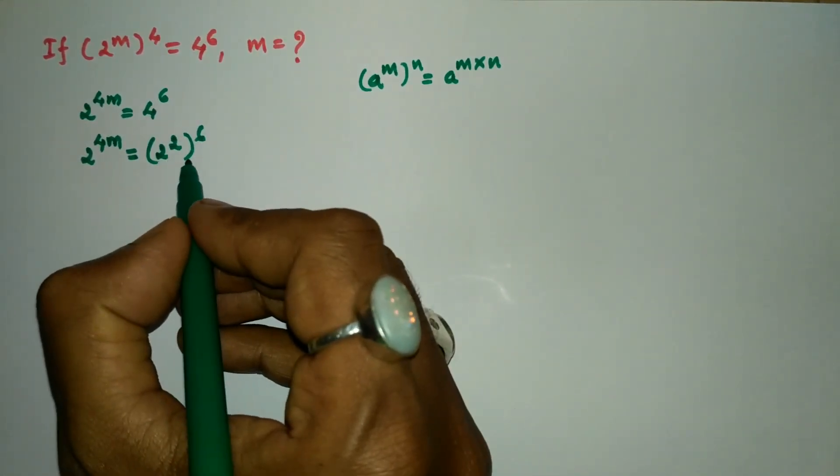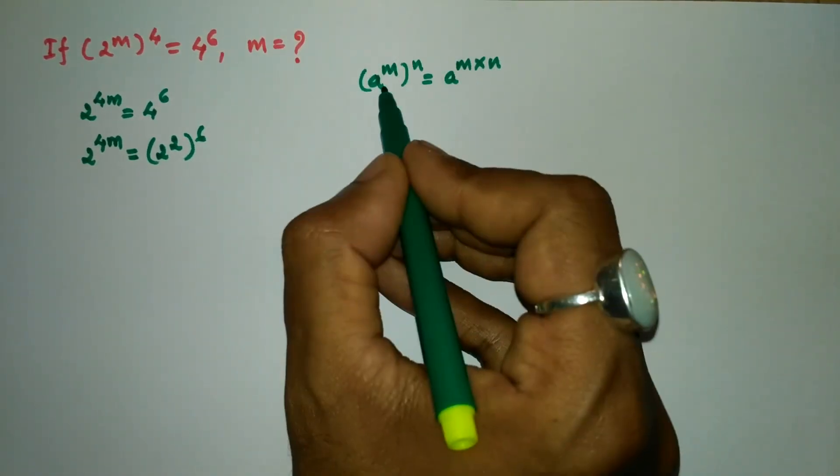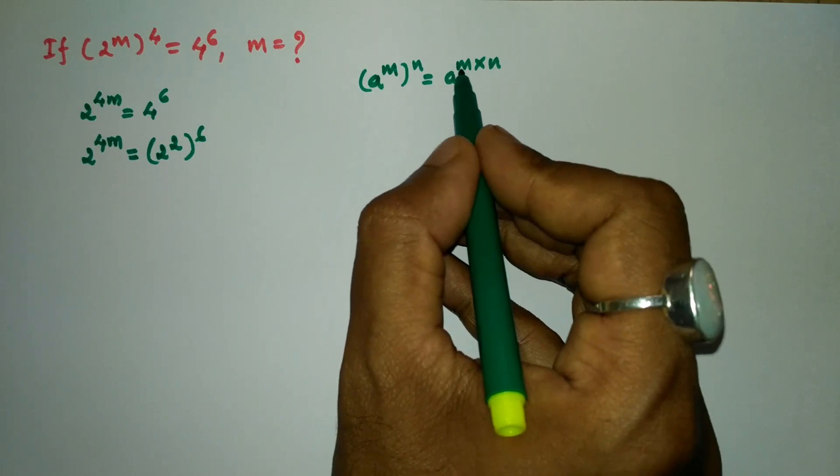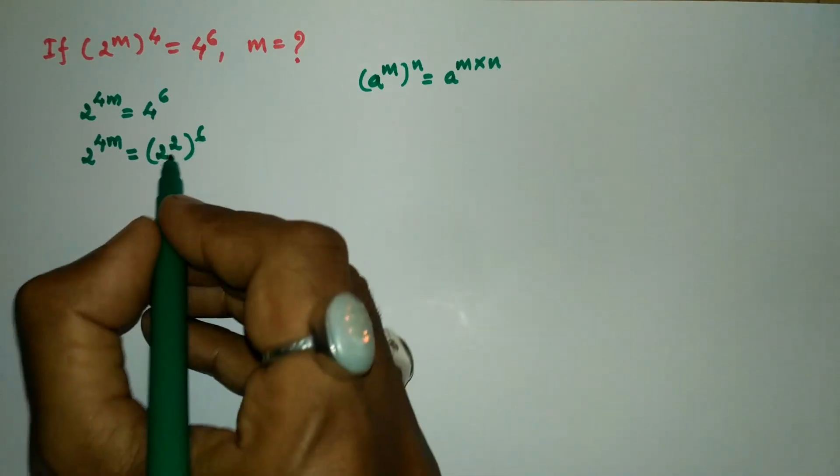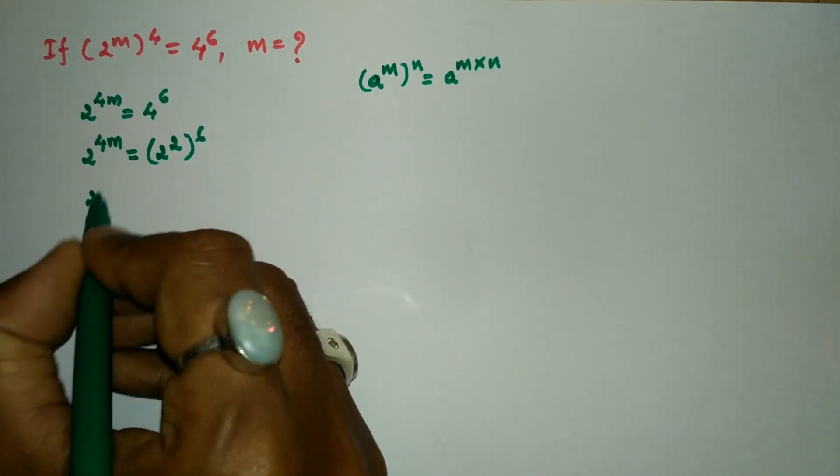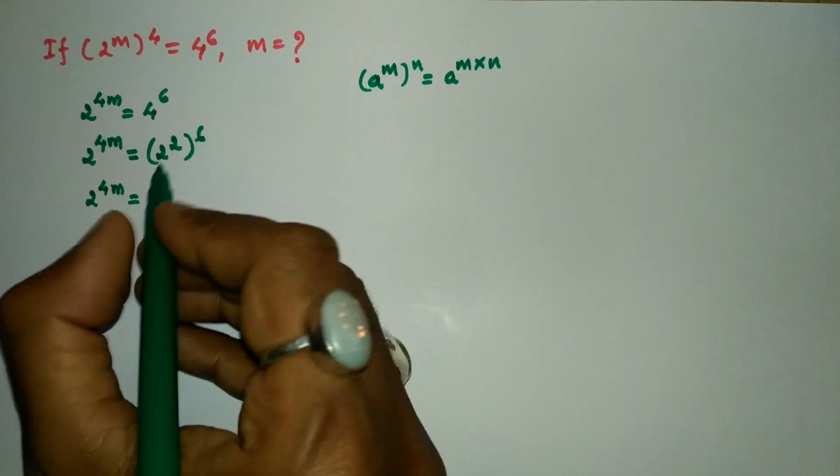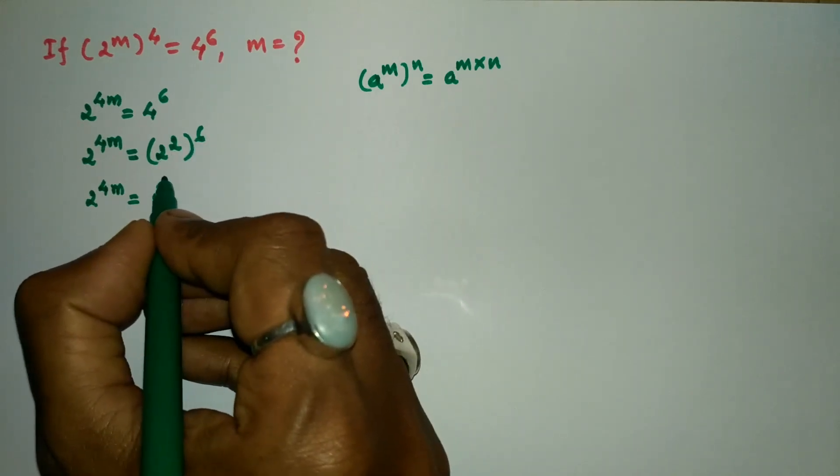As per another law of exponents, (a^m)^n equals a^(m×n). We are going to multiply 6 times 2. So 2^(4m) equals 2^12.